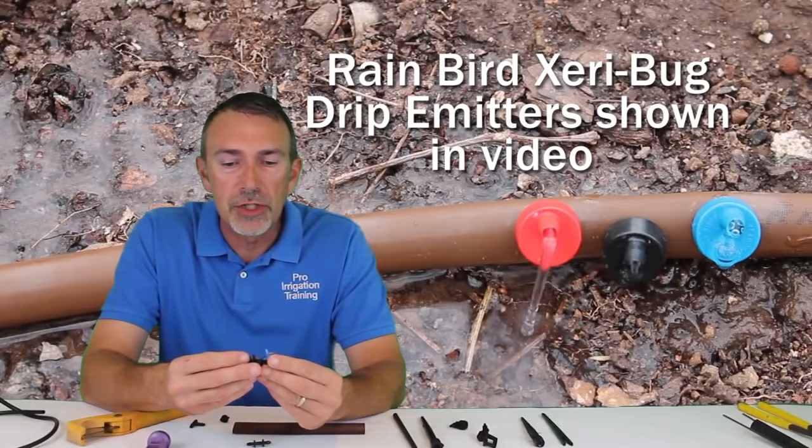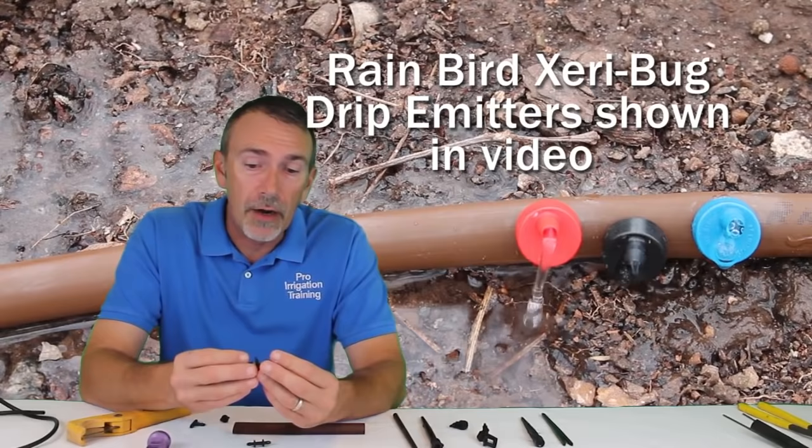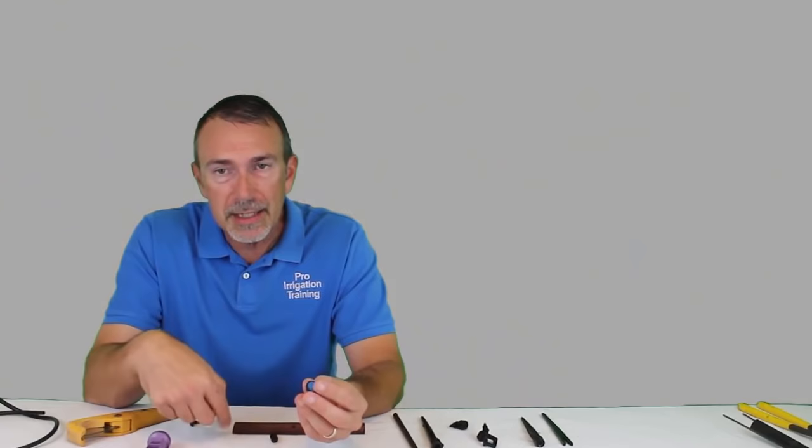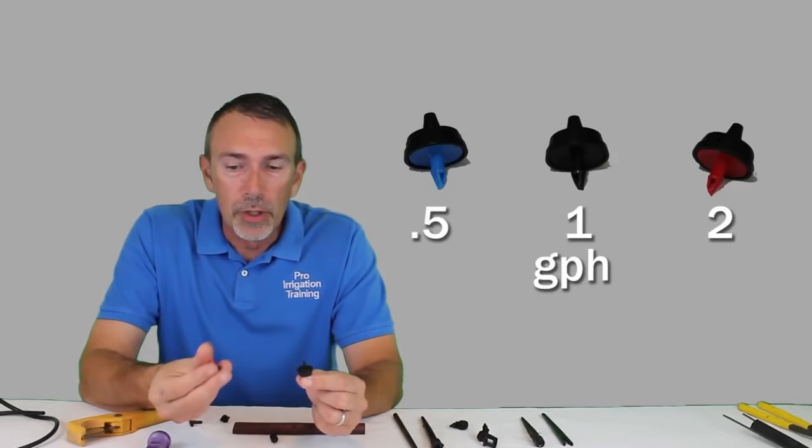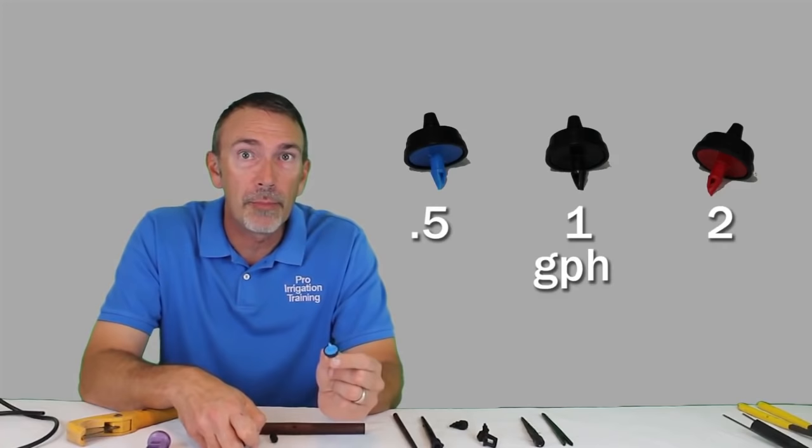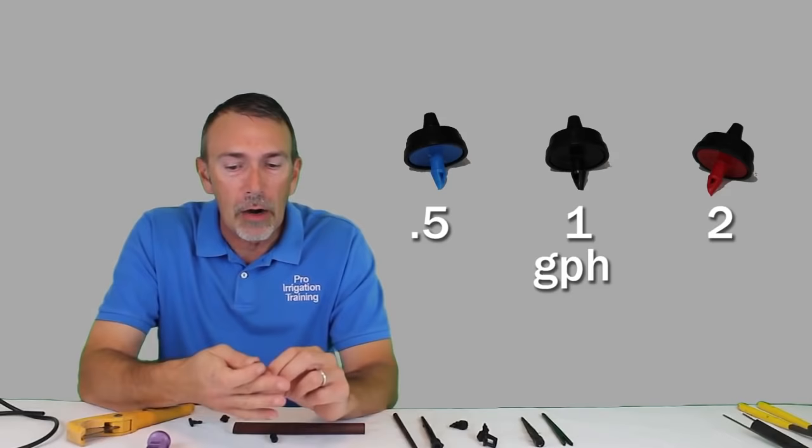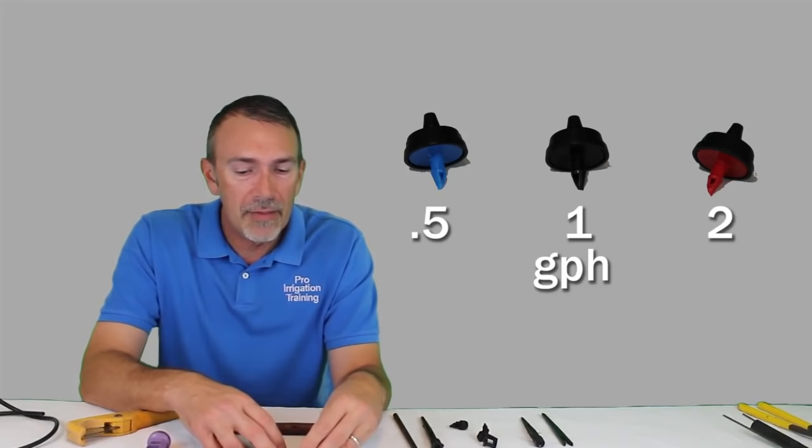In our previous lessons, we talked about situations where a pressure compensating product might be needed and you can get various drippers that are pressure compensating. But what I have here in my hand is landscape product selection of drippers. They're color coded. Our blue is one half gallon per hour. Our black is one gallon per hour. And our red is two gallons per hour.